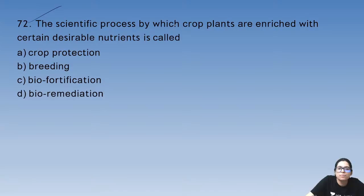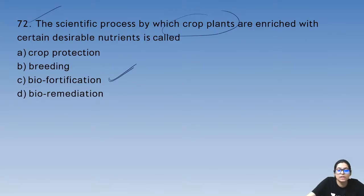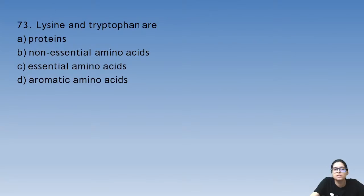Question 72: the scientific process in which a crop is enriched with desirable nutrients is called bio-fortification — vitamins and minerals are added.